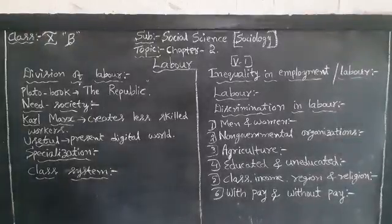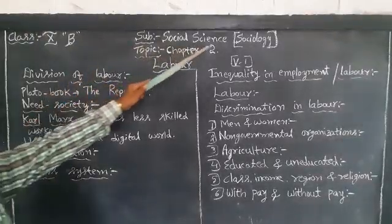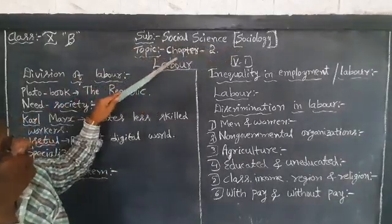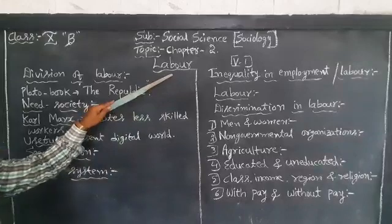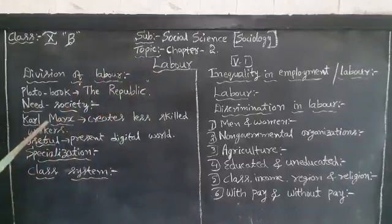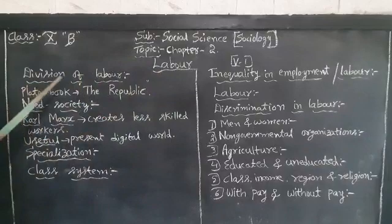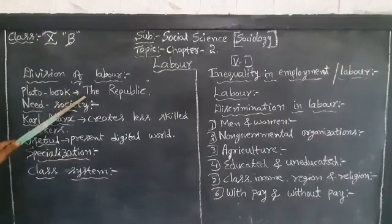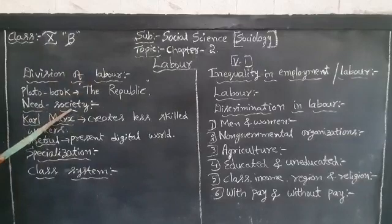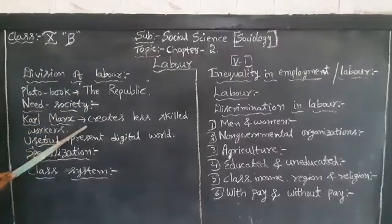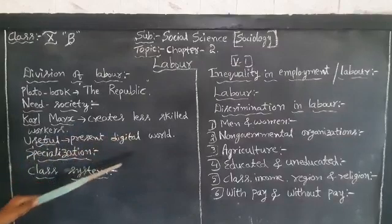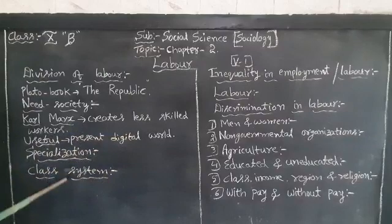Hello children, I am going to start my subject social science, part sociology, chapter number two: Labor. First of all, you must know something about the topic division of labor. In his book the Republic, Plato told something about division of labor. Karl Marx told that it creates less skilled workers and is useful for the present digital world, and relates to specialization and the class system.